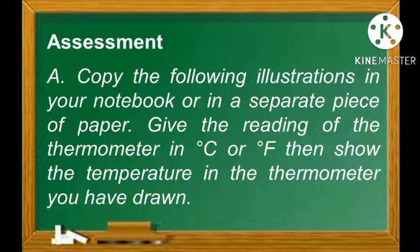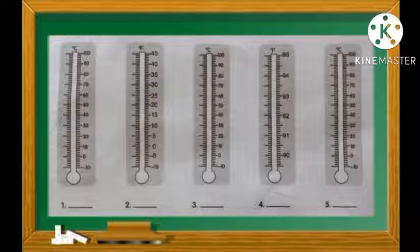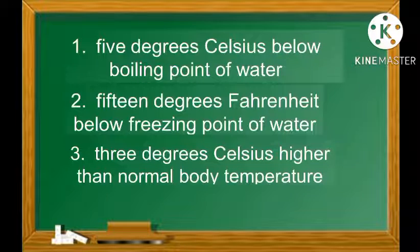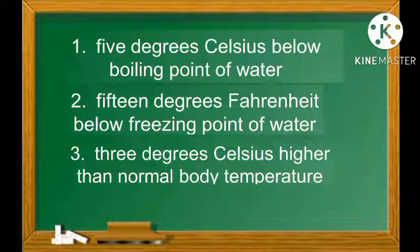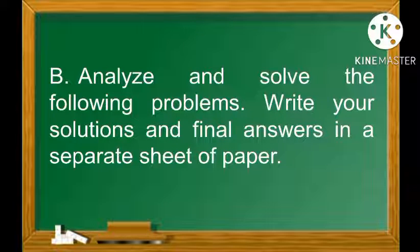I guess you're now ready to answer the assessment part of your module. Copy the following illustrations in your notebook or on a separate sheet of paper. Give the reading of the thermometer in degrees Celsius or degrees Fahrenheit, then show the temperature in the thermometer you have drawn. Number 1: 5°C below the boiling point of water. Number 2: 15°F below the freezing point of water. Number 3: 3°C higher than normal body temperature. Number 4: 7°F lower than normal body temperature. Number 5: Double the normal body temperature.